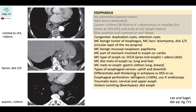Wall thickening patterns help differentiate conditions. In achalasia, thickening is limited to the distal esophagus at the lower esophageal sphincter and measures less than 10 millimeters. In diffuse esophageal spasm (DES), there is symmetric thickening of the distal two-thirds of the esophagus. In esophageal carcinoma, symmetric thickening of more than 10 millimeters is worrisome. These motility disorders are usually evaluated by other modalities but can mimic esophageal cancer on CT.